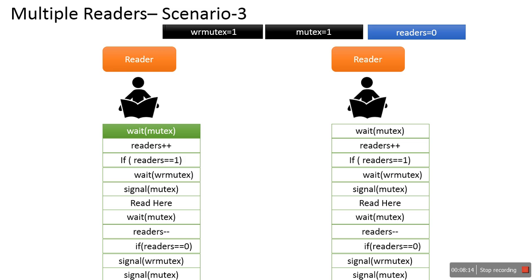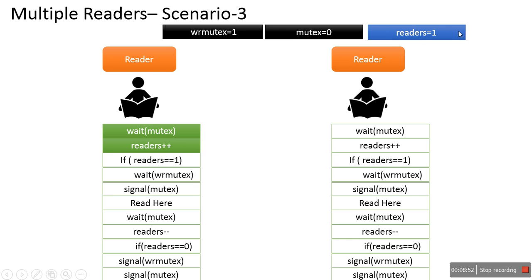In the third scenario, we want to see how multiple readers can be allowed to read the same file. There are two readers. Reader1 starts first: it calls wait(mutex), which decreases the semaphore value to 0 — not less than 0, so it continues. The second instruction increments readers, so readers=1, meaning one reader is currently reading. Then it checks whether this is the first reader, i.e., whether readers==1, and the condition is satisfied.